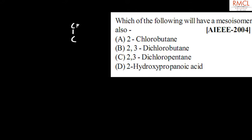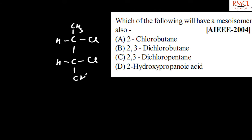2,3-dichlorobutane has the following type of structure, and a meso symmetrical plane is present in this compound, so it is called a meso isomer. Therefore, the correct option for this question is option B.